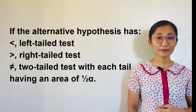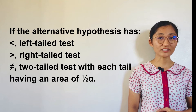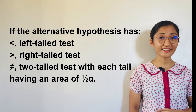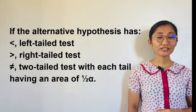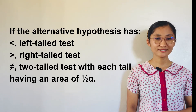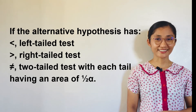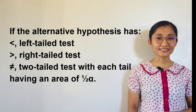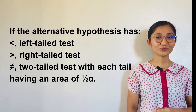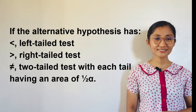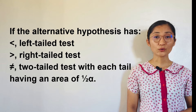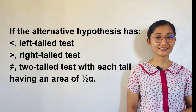If the alternative hypothesis has a less-than inequality symbol, the hypothesis test is a left-tailed test. But if the hypothesis has a greater-than inequality symbol, it is a right-tailed test. Nevertheless, if it has a not-equal-to symbol, then it is a two-tailed test, with each tail having an area of one-half alpha, or one-half of the level of significance.